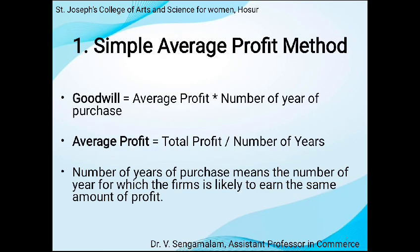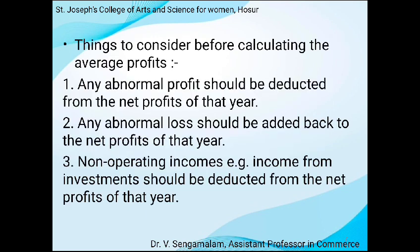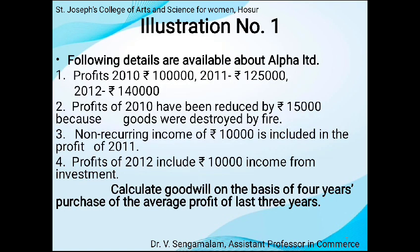The first method is the simple average profit method. The formula is: Goodwill = Average Profit × Number of Years Purchase. Average Profit = Total Profit ÷ Number of Years. Number of years of purchase means the number of years for which the firm is likely to earn the same amount of profit. Things to be considered before calculating the average profit: if there is any abnormal profit, we want to deduct that from the net profit; if there is any abnormal loss, we want to add it back to the net profit; non-operating income, we want to deduct from the net profit.